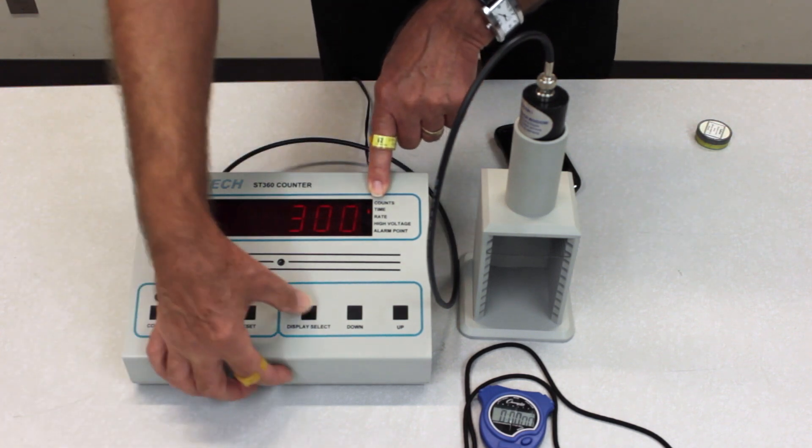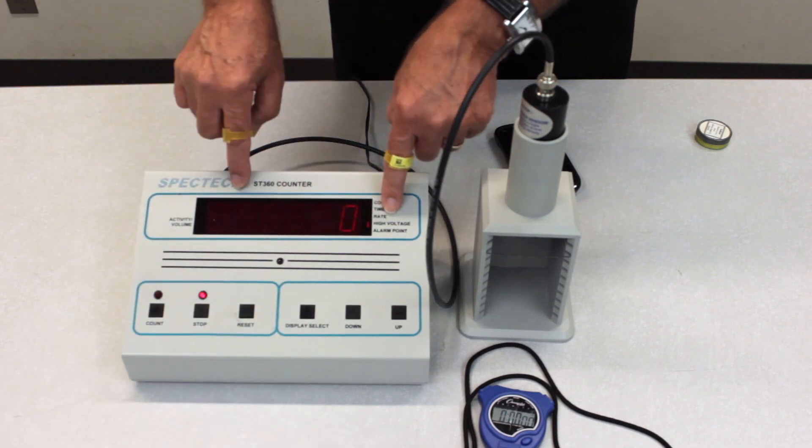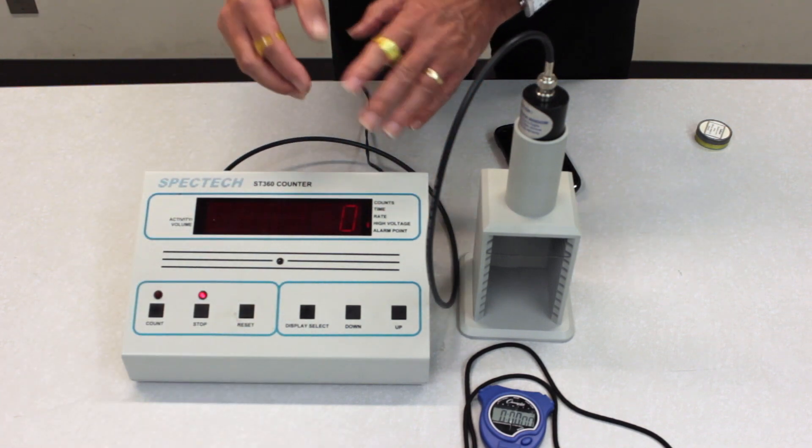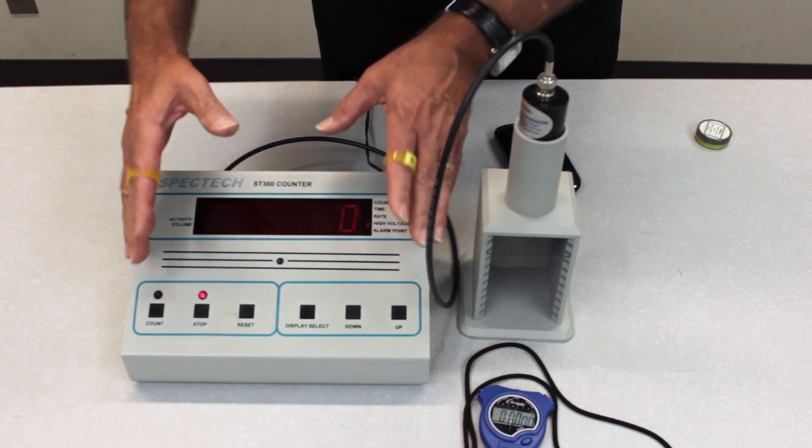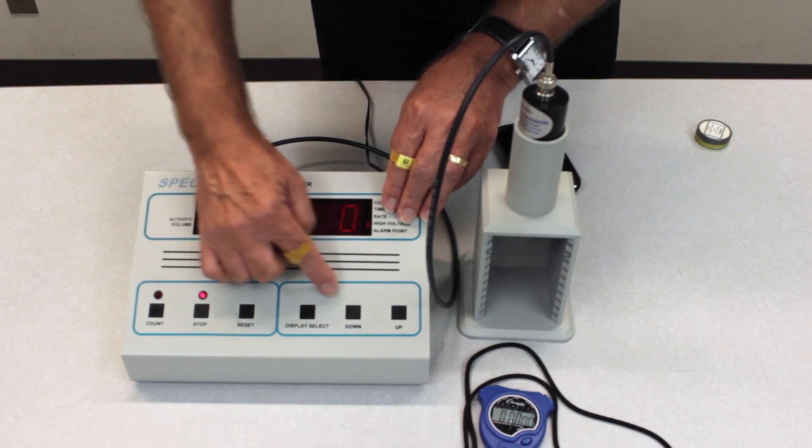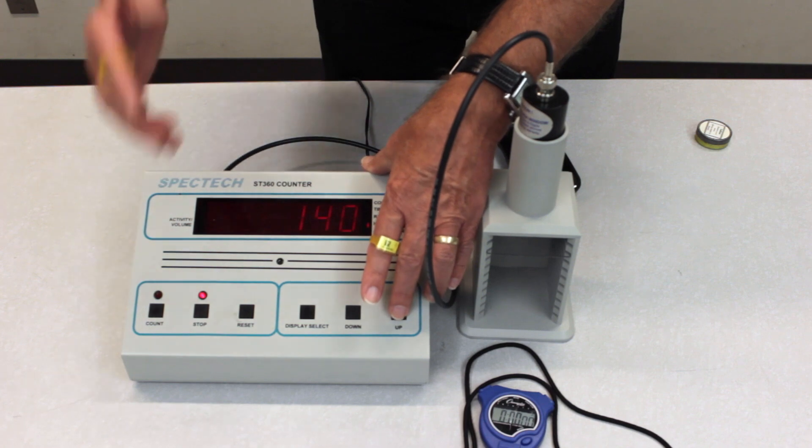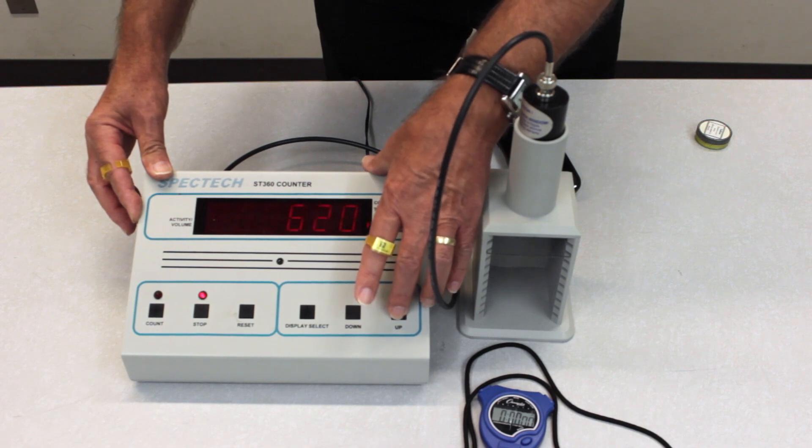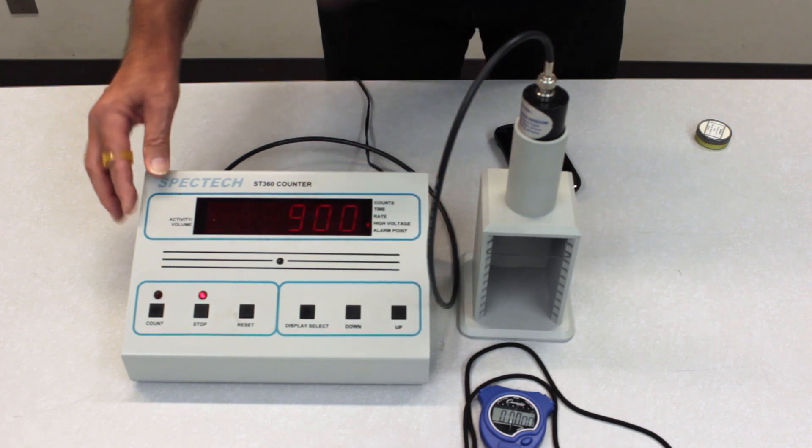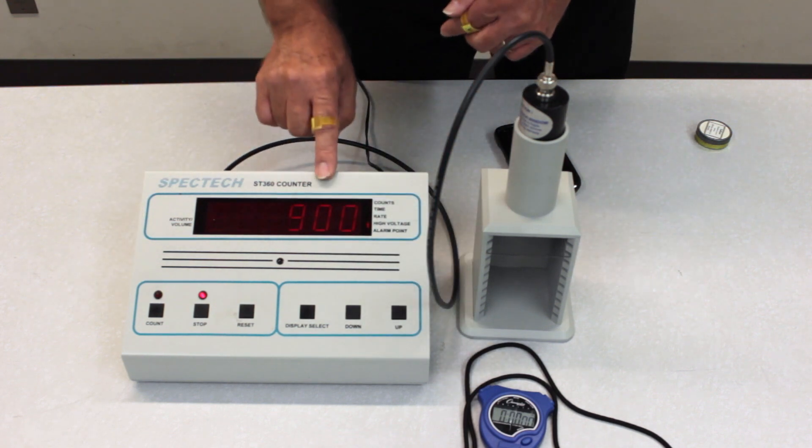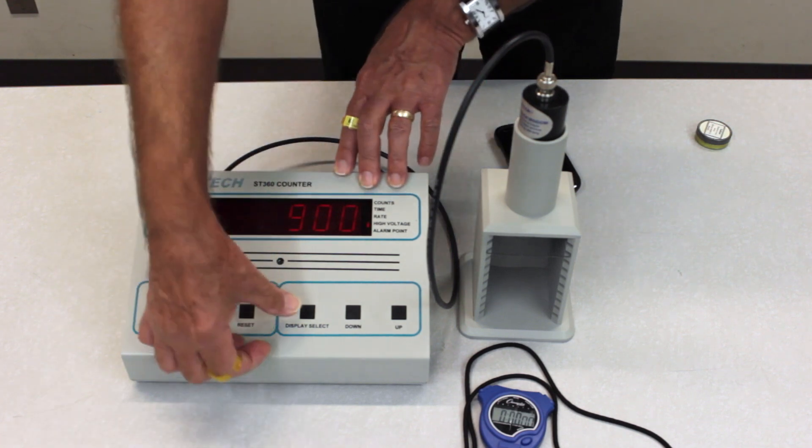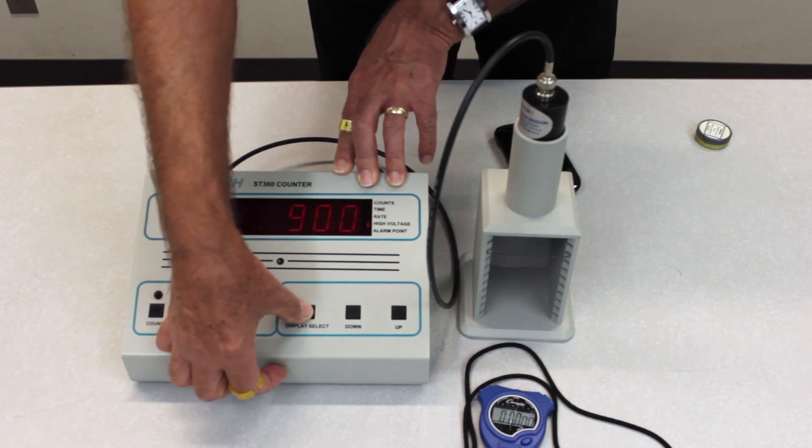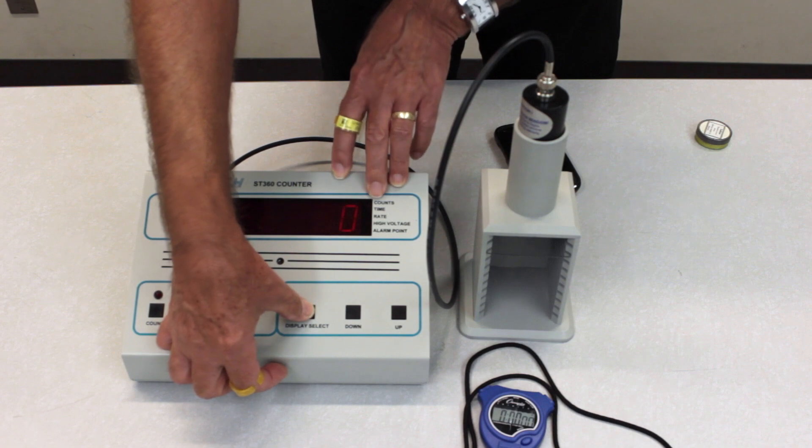Then we go to the high voltage and set the high voltage to whatever you determined previously. Or if we're just trusting the manufacturer, we'll just set this to 900 volts or whatever you've determined from your previous experiment. Finally we reset the display to the counting mode.